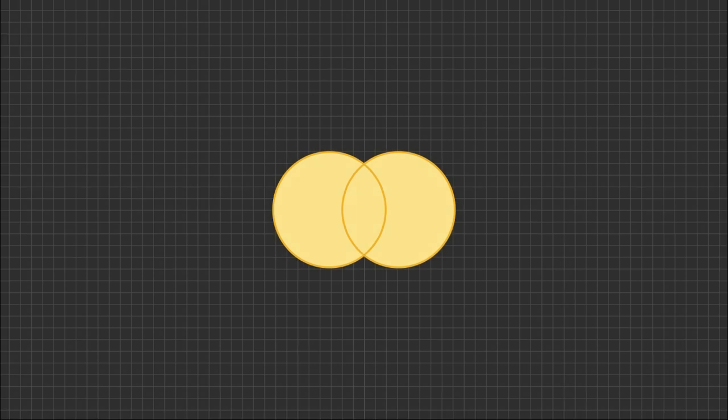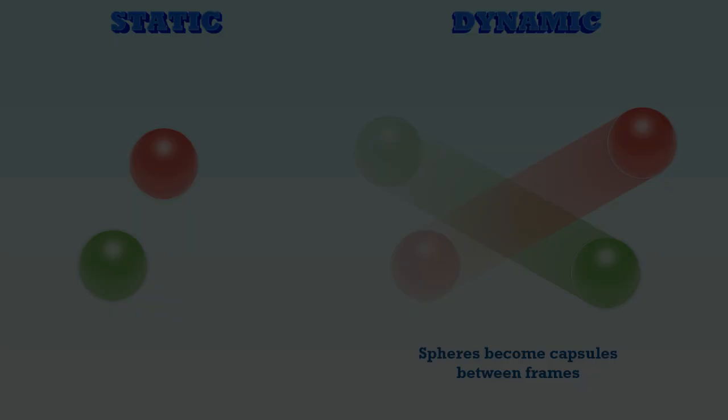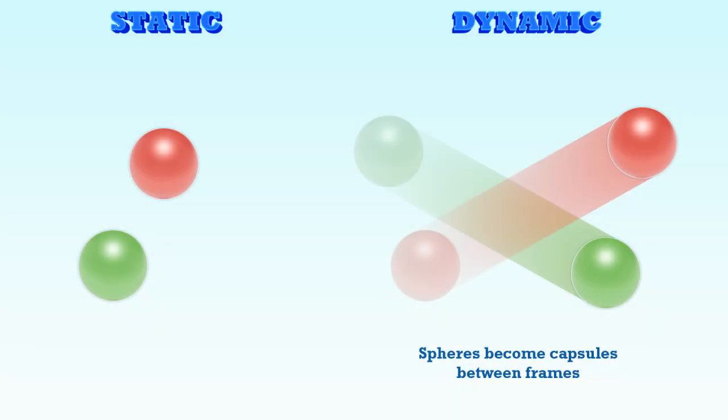Collision detection is how we determine whether game objects are touching or intersecting. There are two main types of collision detection: static collision tests and dynamic tests.